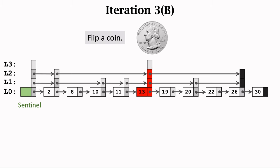After the search, we create a new node containing the key 9. We randomly decide the height of the node. Initially the height is L0. Flip a coin — if heads, increase the height to L1. Flip again — if heads, increase to L2. Flip once again — if tails, stop growing. A new node is created with height 2.